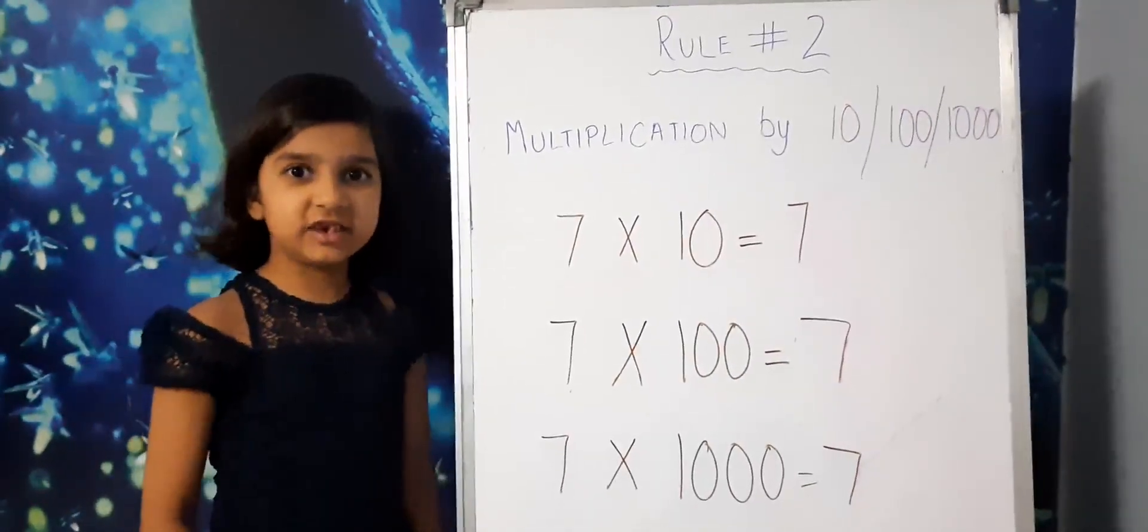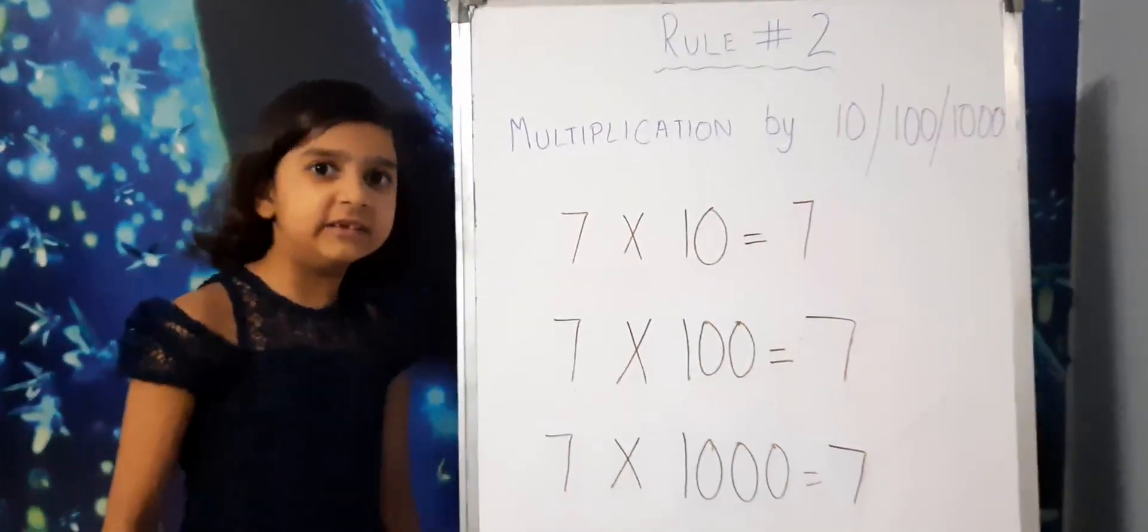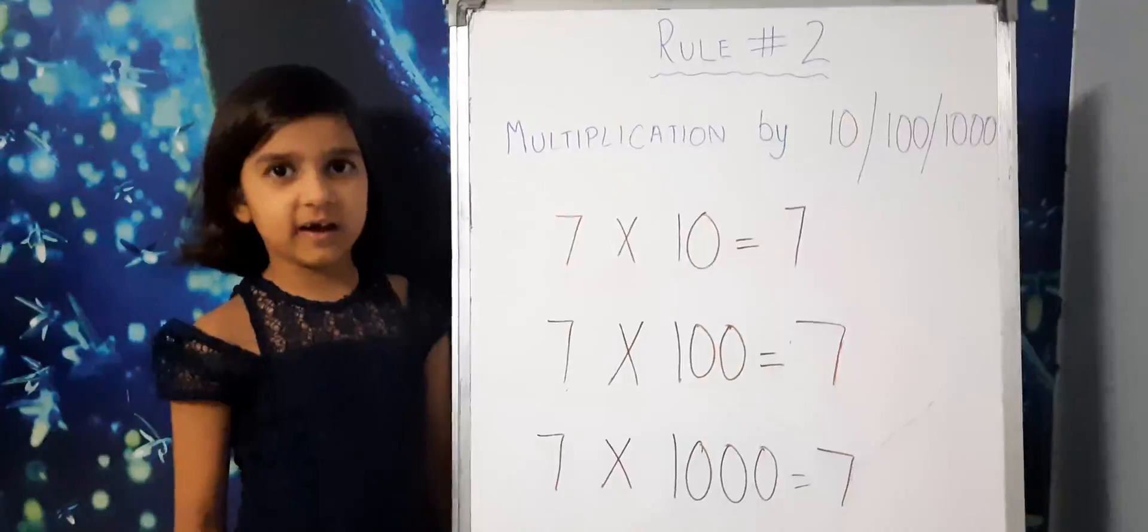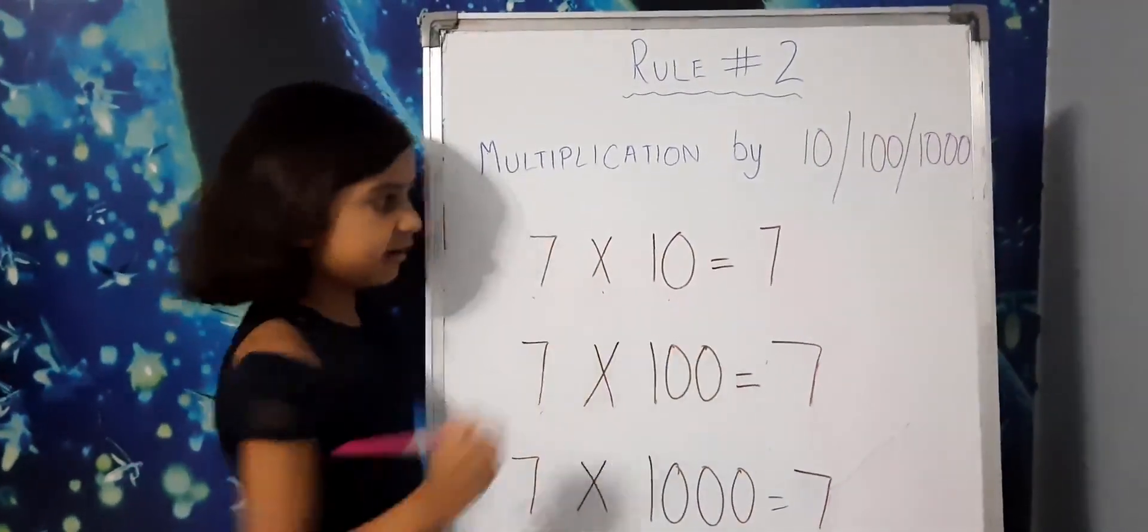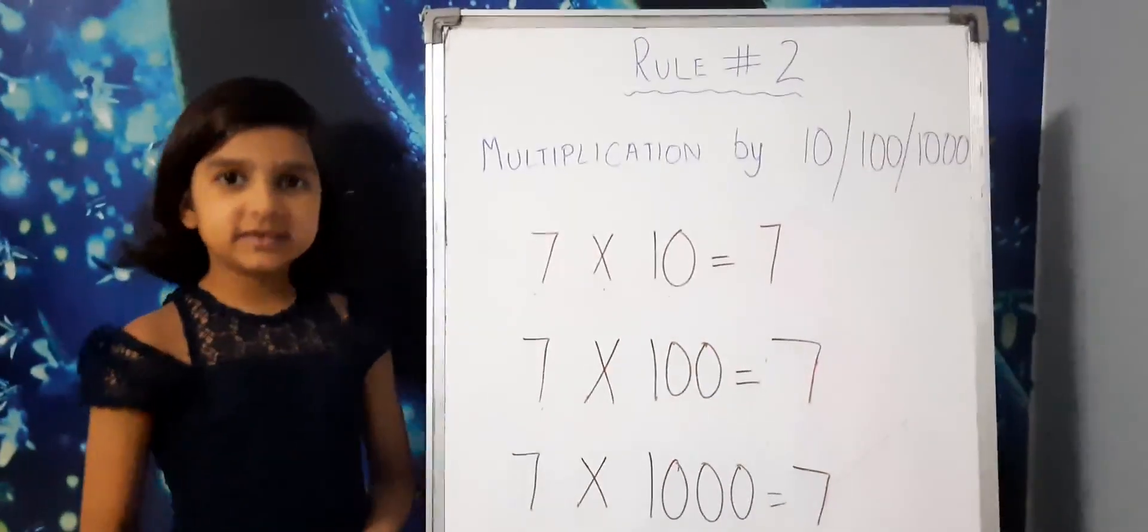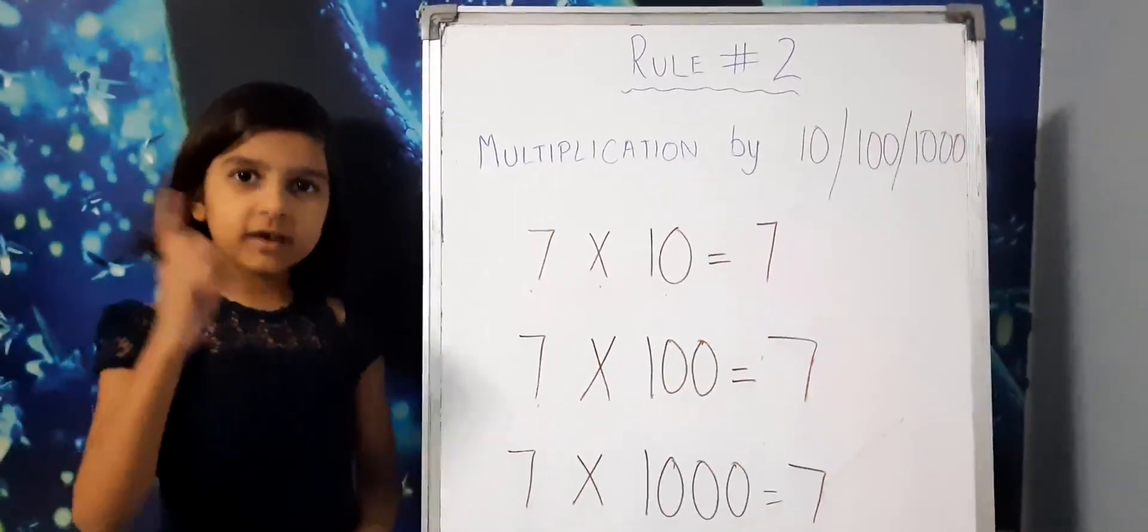Let me show you how. Let's take a number 7. If I multiply 7 by 10, the answer will be 7 followed by 1 zero.